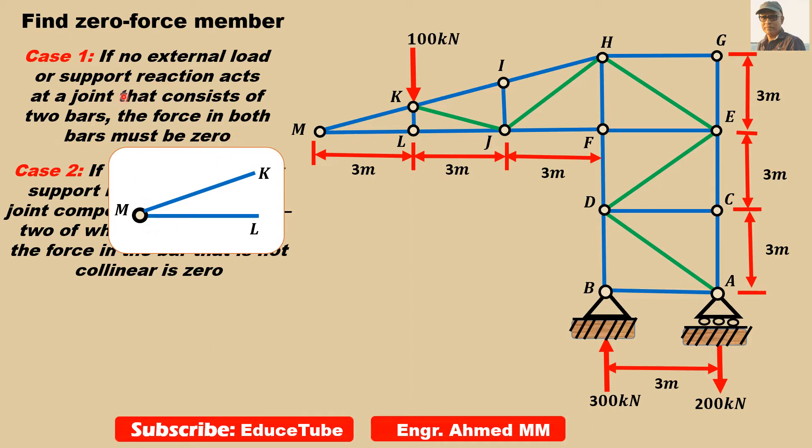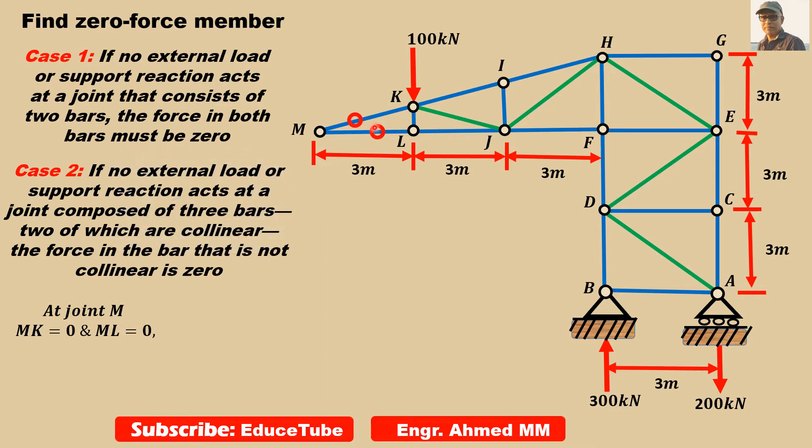According to Case 1, if there is no external load, no support reaction, then these two members will carry no force. We are marking these two members with zero, indicating it is a zero force member. I have written MK equals zero, ML equals zero.